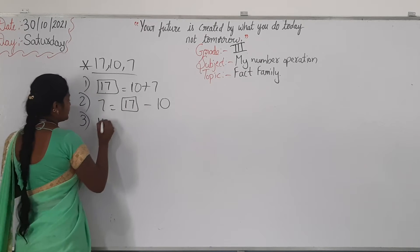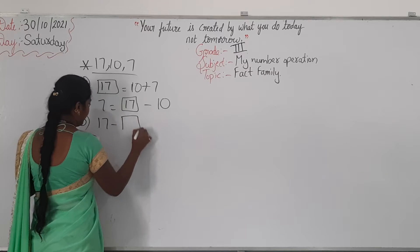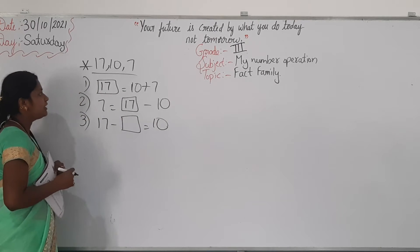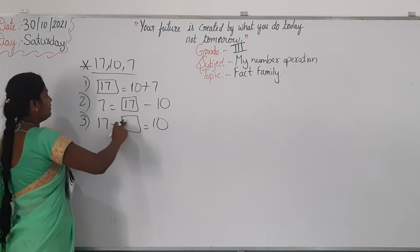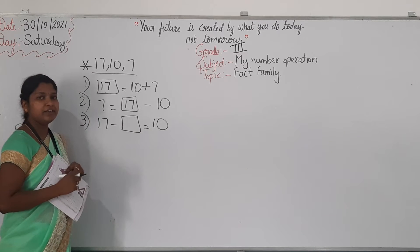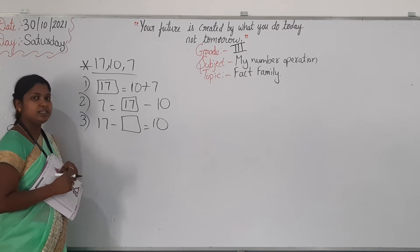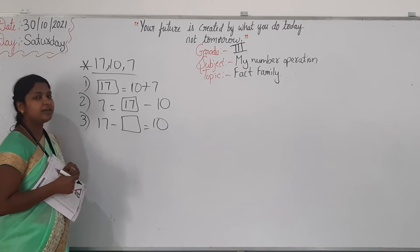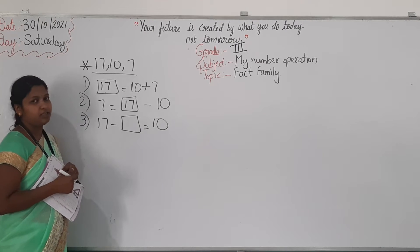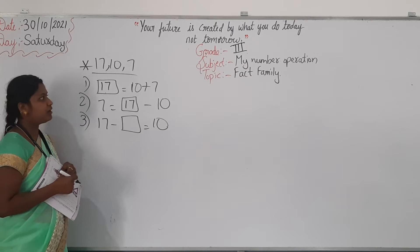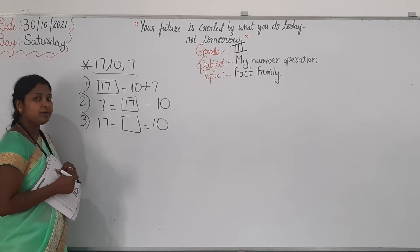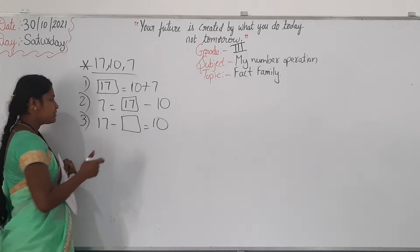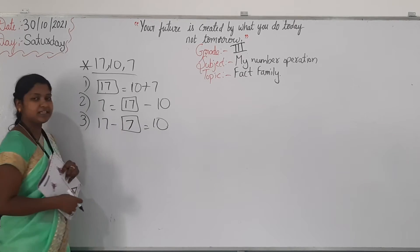Next: 17 minus blank box equals 10. So, which number will come? If you write 17, 17 minus 17 is 0 — that is wrong. If you write 10, 17 minus 10 will be 7 — that is also wrong. If you write 7, 17 minus 7 is 10. So, 7 is the correct number.